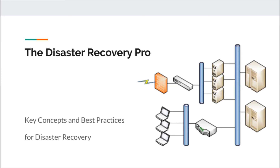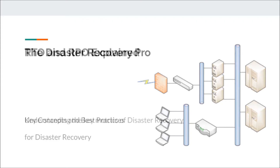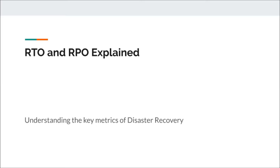This is the Disaster Recovery Pro, and today we're going to continue our video series going over some of the basic concepts and best practices of disaster recovery. In today's video, we're going to talk about the RTO and RPO metrics. RTO is Recovery Time Objective, and RPO is Recovery Point Objective. We'll explain what they are, how they're used, and why they're important — because they're not just metrics, they're actually the parameters that define the requirements for a recovery solution.